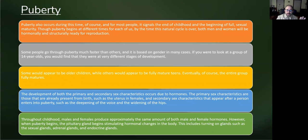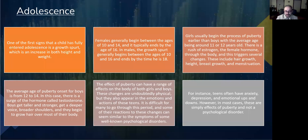The development of both primary and secondary sex characteristics occurs due to hormones. Primary sex characteristics are those already present at the time of birth, such as the uterus in females. Secondary sex characteristics appear after a person enters puberty, such as the deepening of the voice and the widening of the hips. Throughout childhood, males and females produce approximately the same amount of both male and female hormones. When puberty begins, the pituitary gland begins stimulating hormonal changes in the body, turning on glands such as the sexual gland, adrenal gland, and endocrine glands.